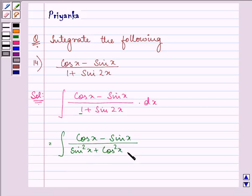So we have sin square x plus cos square x plus sin 2x can be written as 2 sin x cos x.